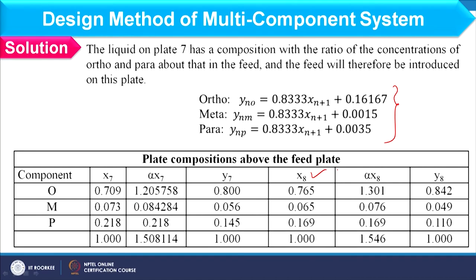We then consider plates above the feed plate, calculating compositions for the 8th plate onward using the above-feed operating lines. Continuing up to the 14th plate, we find its composition is approximately equal to the distillate composition, though not exactly equal. Beyond the 14th plate, it is not possible to match the distillate further.